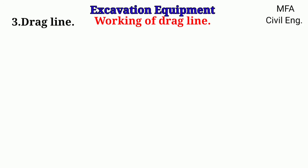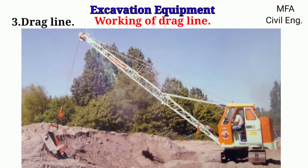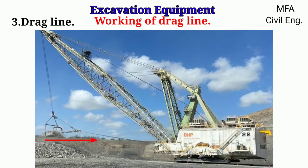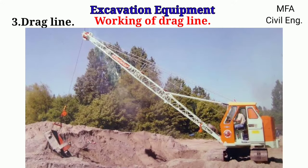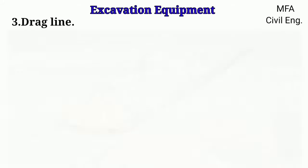The working operation of a dragline is such that the bucket is lowered in a fully dumped position by releasing both hoist and drag cables until it rests on the ground with teeth dug into the earth. The hoist cable is slackened slightly and then drag pull is applied, filling the earth in the bucket. The bucket then takes a horizontal position and is hoisted. When the required dumping height is attained, the boom is swung to the dumping position and the drag brake is released, dumping the load.